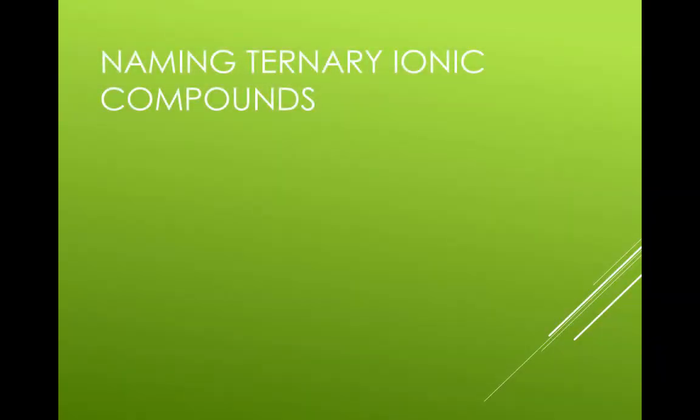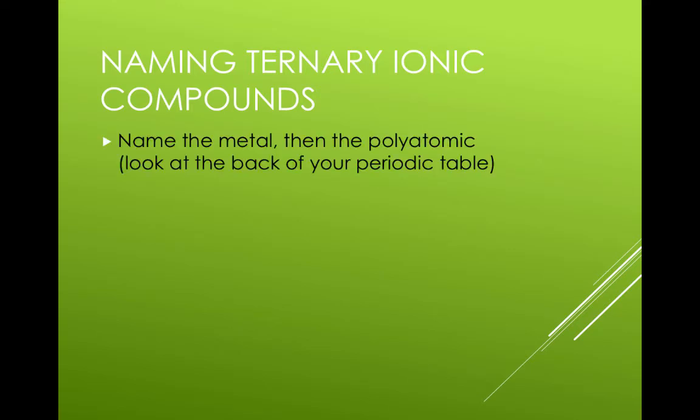Naming ternary ionic compounds is very similar to naming binary ionic compounds. The steps are: first write the name of the metal, then the name of the polyatomic ion. Use your list of polyatomic ions to determine the polyatomic ion's name. The big difference here is not to change the ending to '-ide'. If the metal is multivalent, then you must use roman numerals to identify which metal ion is being used in the compound.